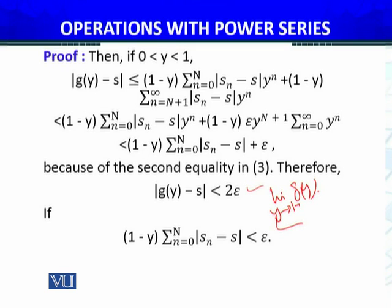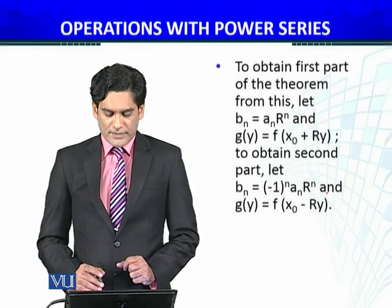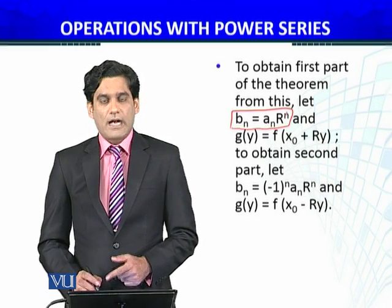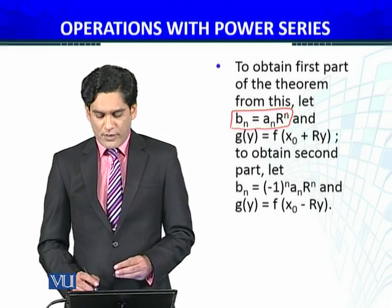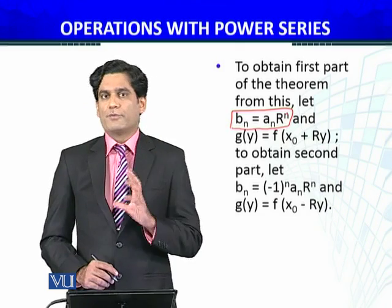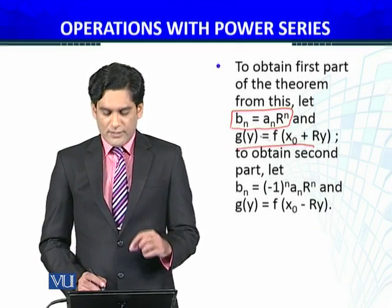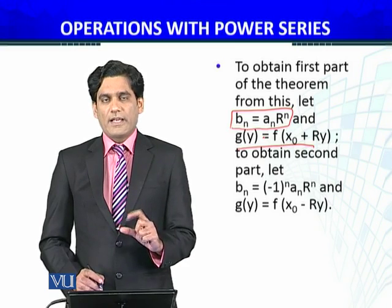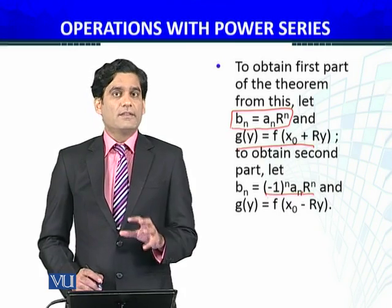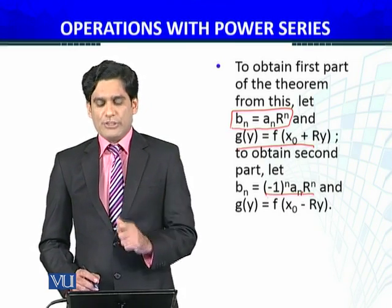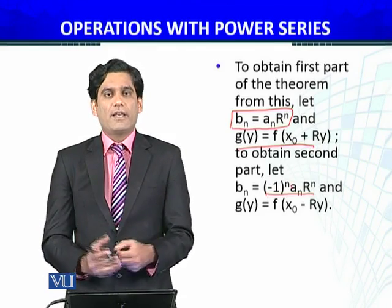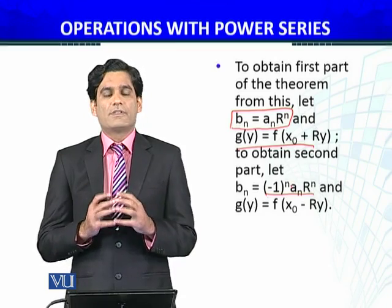We have proved that the limit as y approaches 1 from the left side of G(y) equals S. Now to obtain the first part of the theorem, let b_n equal a_n times R^n, and let G(y) equal f(x₀ plus R times y). For the second part, let b_n equal (-1)^n times a_n times R^n, and let G(y) equal f(x₀ minus R times y). With these substitutions, the proof applies exactly and the theorem is proved.